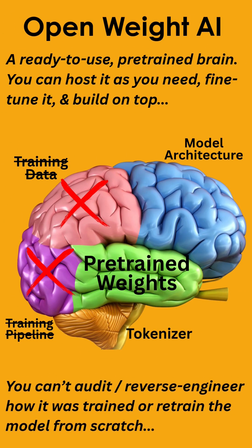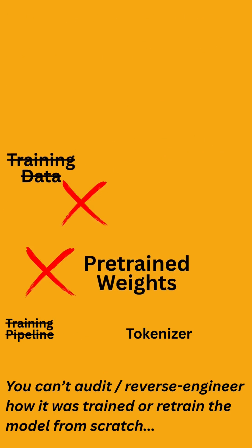Open weight AI is like the human brain — not a single blob, but made of different parts. Some parts, like training data and the training pipeline, are locked. You can't see how the brain was originally trained. But what you do get are the pre-trained weights, the learned intelligence — so you can quickly use it, fine-tune it, and build on top of it.